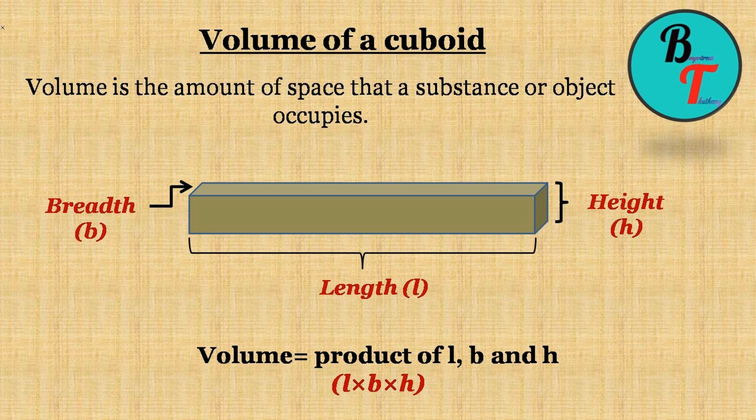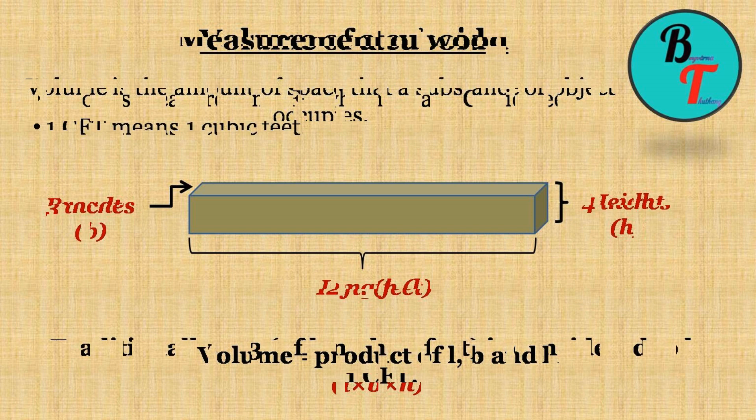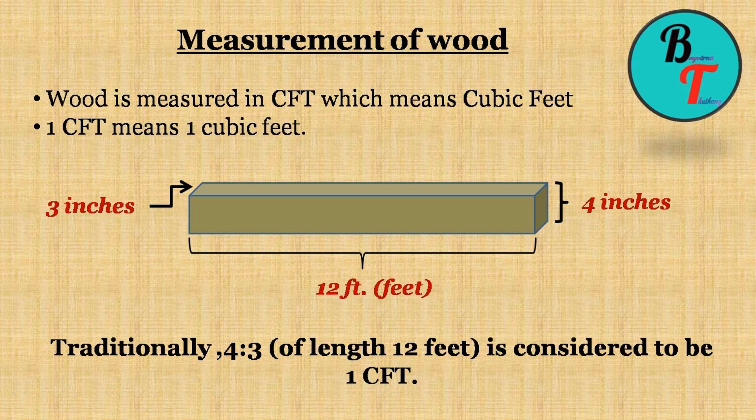We are already well known with the volume of a cuboid which is l into b into h, where l is the length, b is the breadth, and h the height. Now let us come to the measurement of wood.